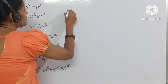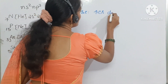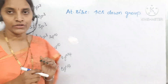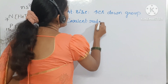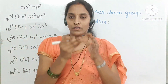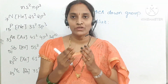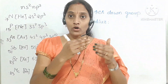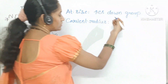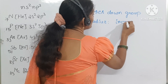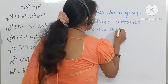Atomic size increases down the group. Covalent radius also increases down the group overall, though from arsenic to bismuth the increase is not as large due to the involvement of d and f electrons. The overall order is: nitrogen < phosphorus < arsenic < antimony < bismuth.